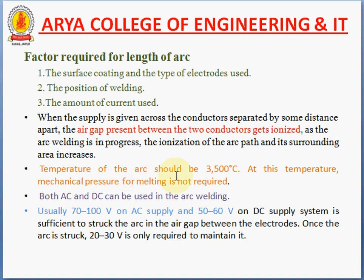In this method, the temperature of the arc should be maintained at 3500 degrees Celsius. At this temperature, mechanical pressure for melting is not required, as this is non-pressure welding. Both AC and DC supply can be used for arc welding. Generally, 70 to 100 volts on AC supply and 50 to 60 volts on DC supply is sufficient to strike the arc. Once the arc is struck, generally only 20 to 30 volts is required to maintain it.